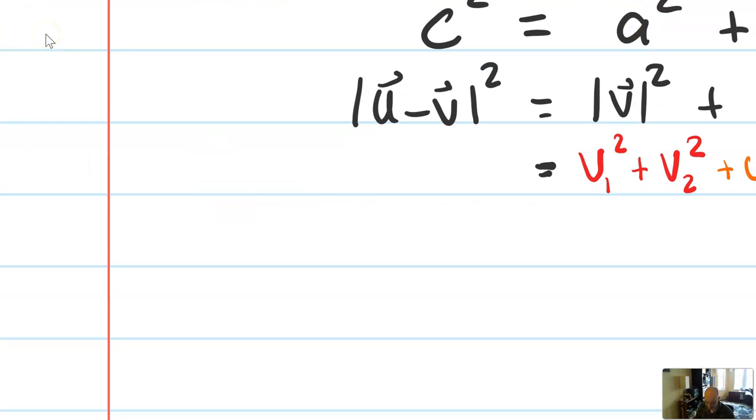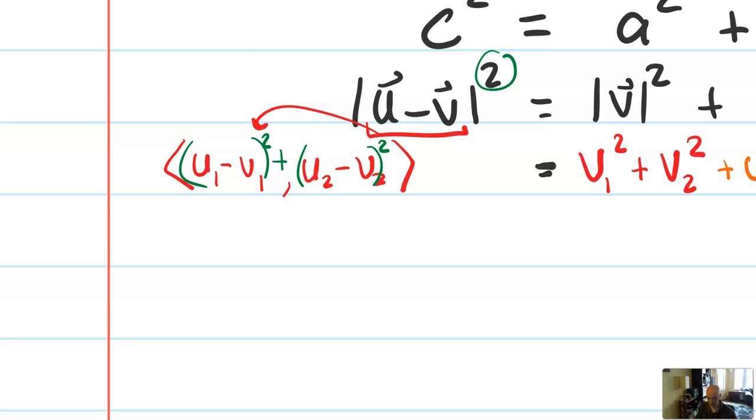The roots cancel out, and I just get u1 squared plus u2 squared. That's going to happen the same for v. On the left side, this is where the messiness happens. u minus v, the vector, is really its components are u1 minus v1 comma u2 minus v2. Then I would need to compute the magnitude by squaring all those, add them up, square root it, and then square it again. This square out here cancels out the square root, but I still have to square those components. So this is going to be u1 minus v1 squared plus u2 minus v2 squared.